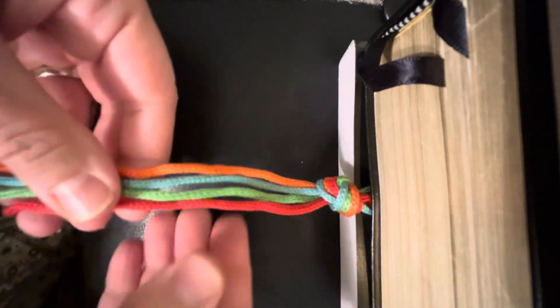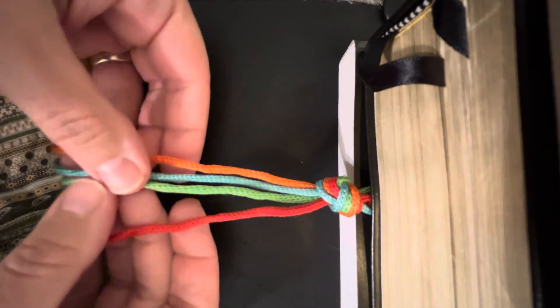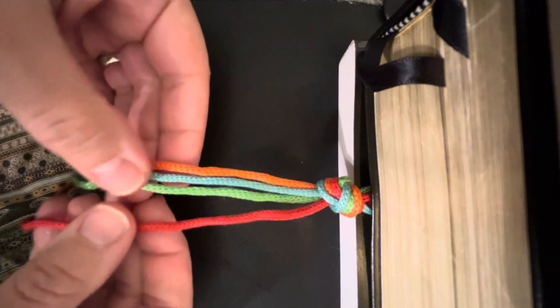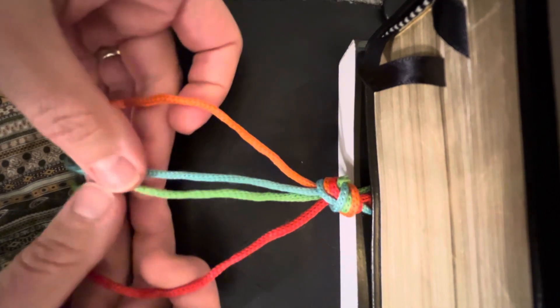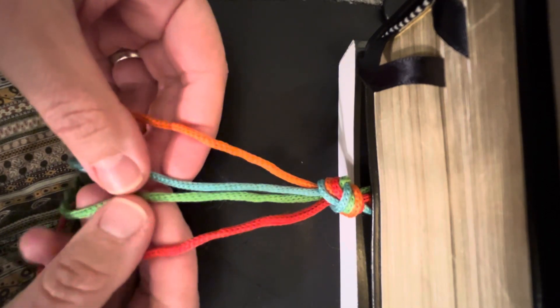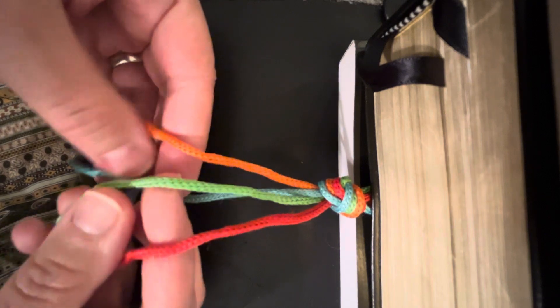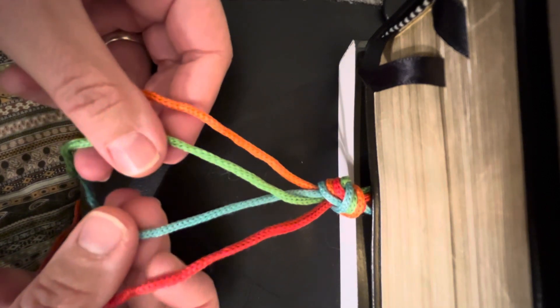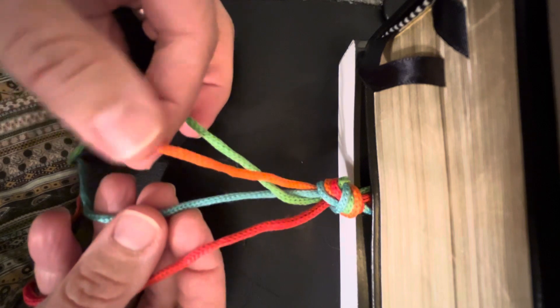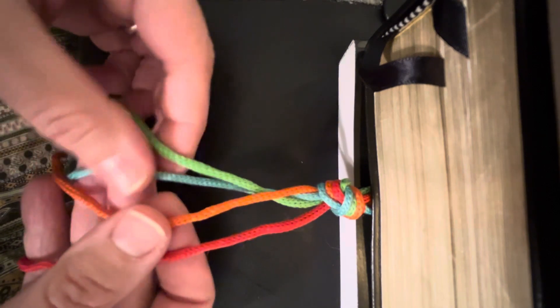So first you're going to kind of have two on the edge and two in the middle. You're going to twist the ones in the middle, and then bring the one from the outside in and cross over both of those. Then this blue one you're going to cross over that one.